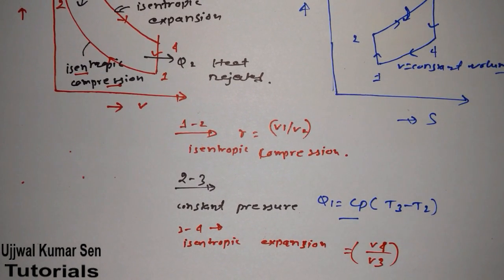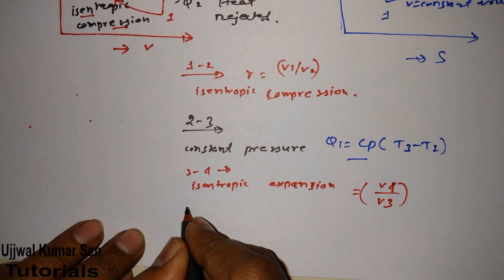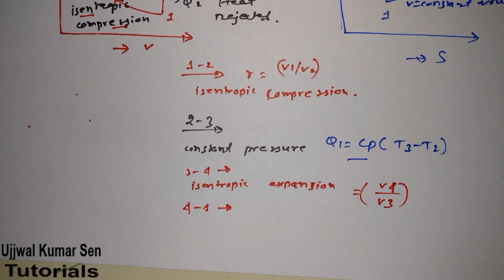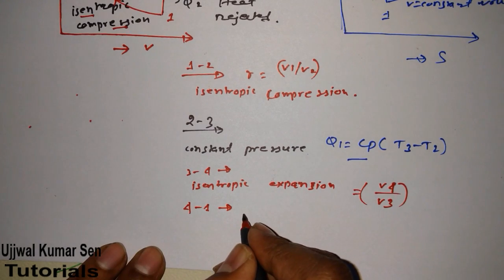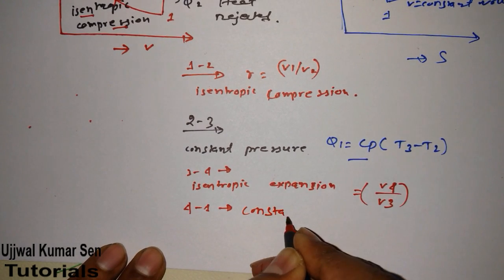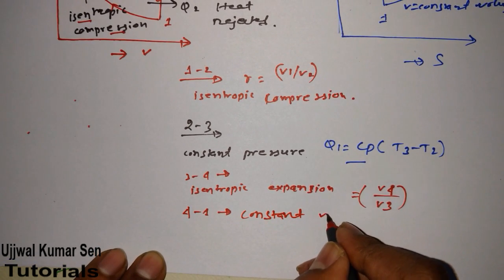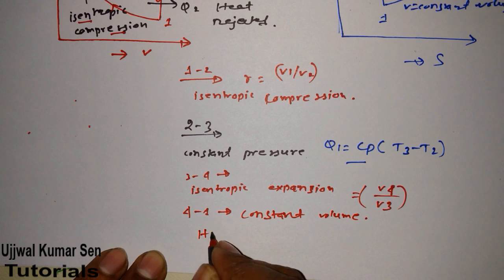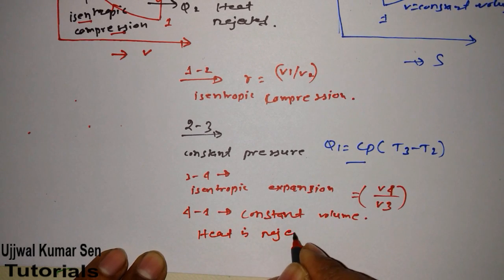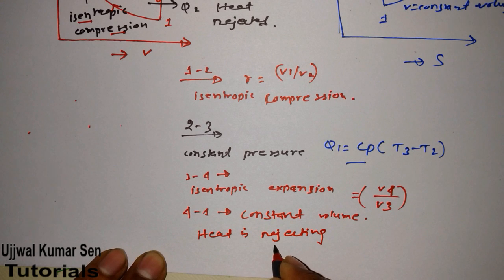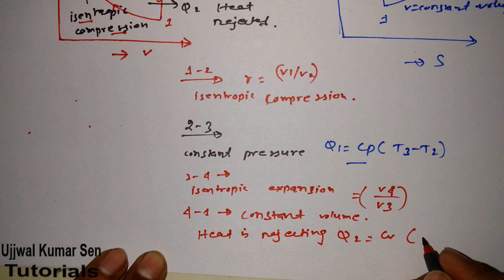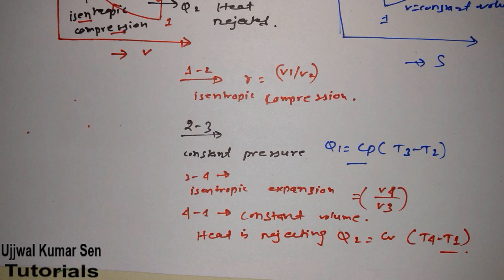Process 4 to 1 is where heat is rejected. This process occurs at constant volume. Therefore, Q2 equals Cv times (T4 minus T1).